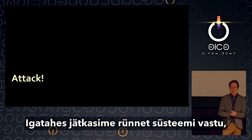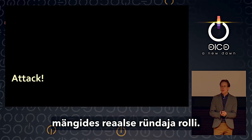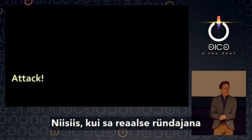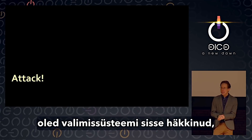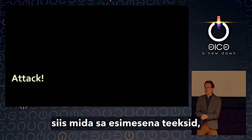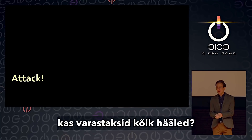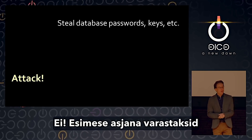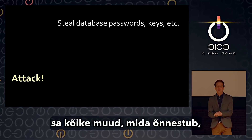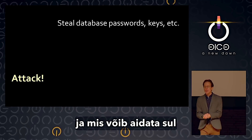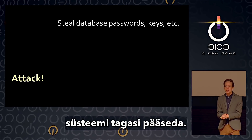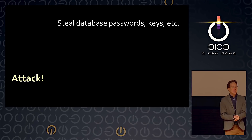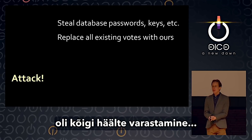From there, we proceeded to attack the system, playing the role of a real attacker. You've hacked into the voting system — what's the first thing you do? You don't steal all the votes first. You steal everything else you can get your hands on that might let you get back into the system — you establish persistence. The second thing we did was steal all the votes.